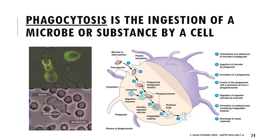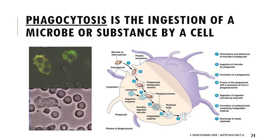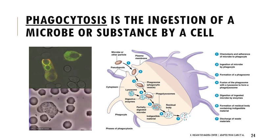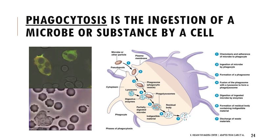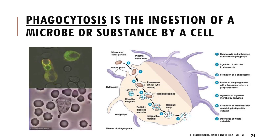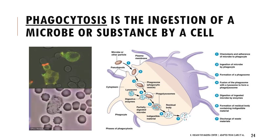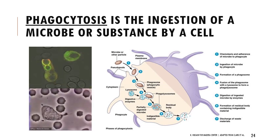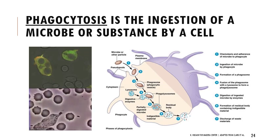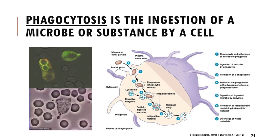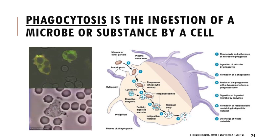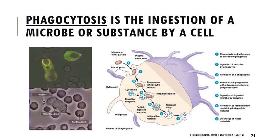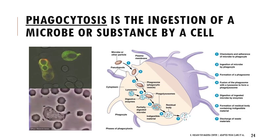In phagocytosis, the phagocytic cell first undergoes chemotaxis — receiving a chemical signal encouraging it to move toward the pathogen. It then adheres to the pathogen, engulfs and surrounds it, and eventually breaks it down. Phagocytosis is non-specific with no memory component, but is an important response once something gets past the first lines of defense.